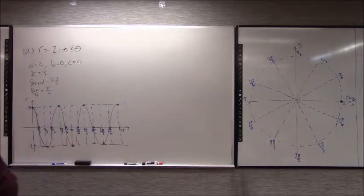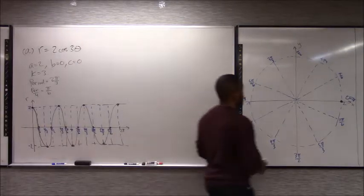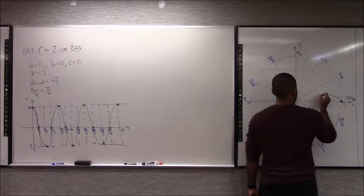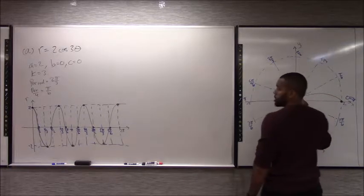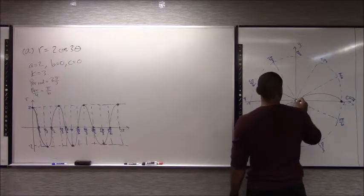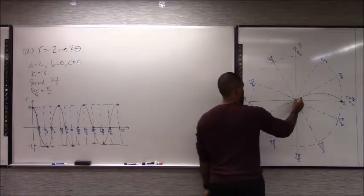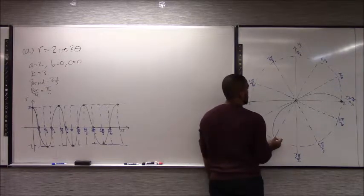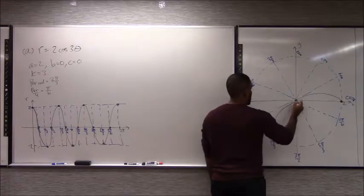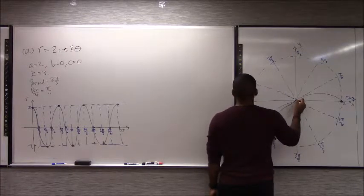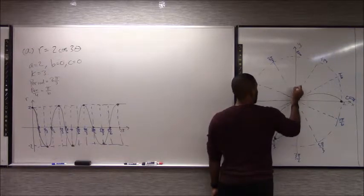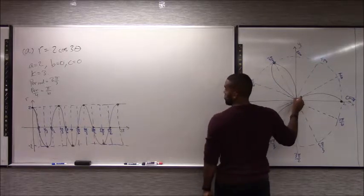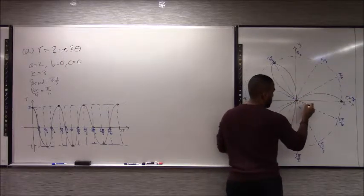Now we can start sketching the function. After (π/6, 0), the next point is π/3 at negative 2 — so you need to move backwards. It would be on the 4π/3 direction, going all the way to radius 2. Then it goes back to 0 at π/2. Then 2π/3 is at radius 2, so we go over there. Then back to 0 for π/6 past that, and then at π it's negative 2 — so again you go in the opposite direction.